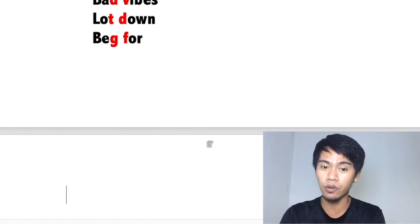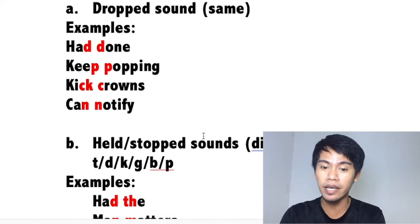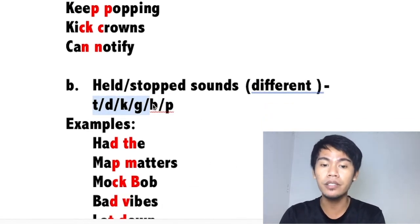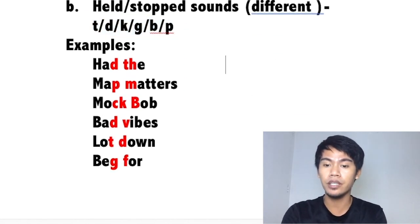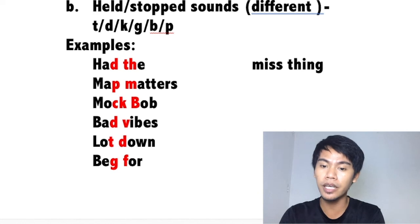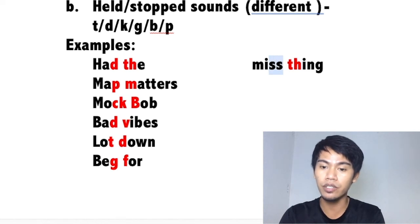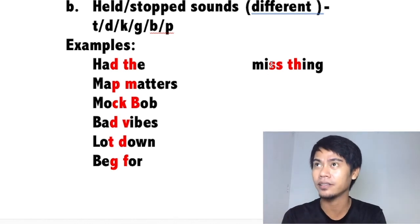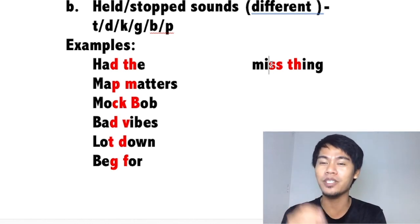Now, what about other sounds? These T, D, K, G, B, P are the only sounds where you consider the held sound for the initial position. For example: 'miss thing.' The last sound is S — consonant. The first sound is TH — consonant. Different sounds. But can we hold the S sound? No — S is not in the list. You cannot say 'mis' with a held S. You have to put the S sound in and say 'miss thing.' That's an exception to the rule.